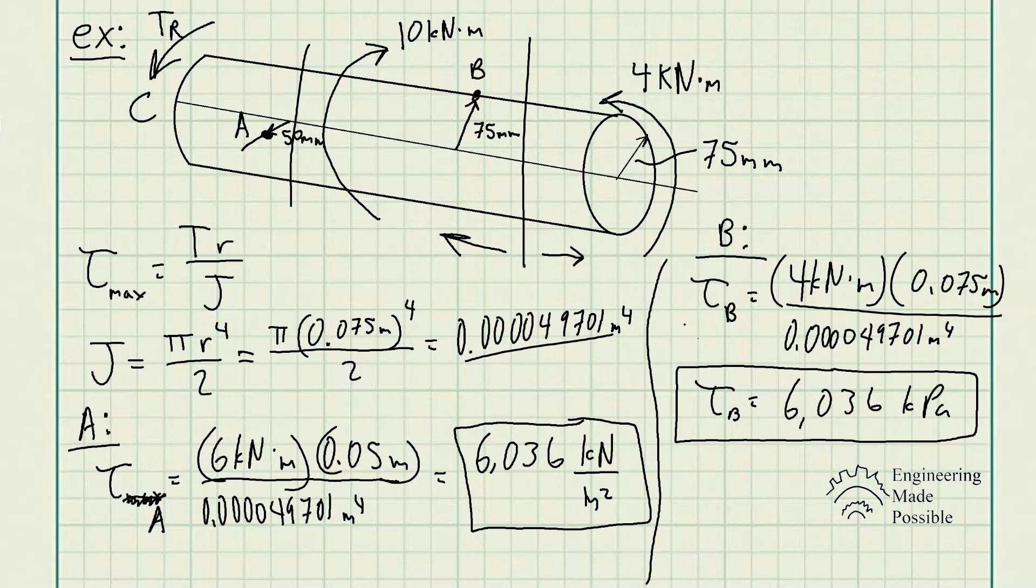One of them experienced less torque, however, since it was at the surface, it's going to experience higher shear stress. For that reason, that's why they're the same, even though the torques are different values.